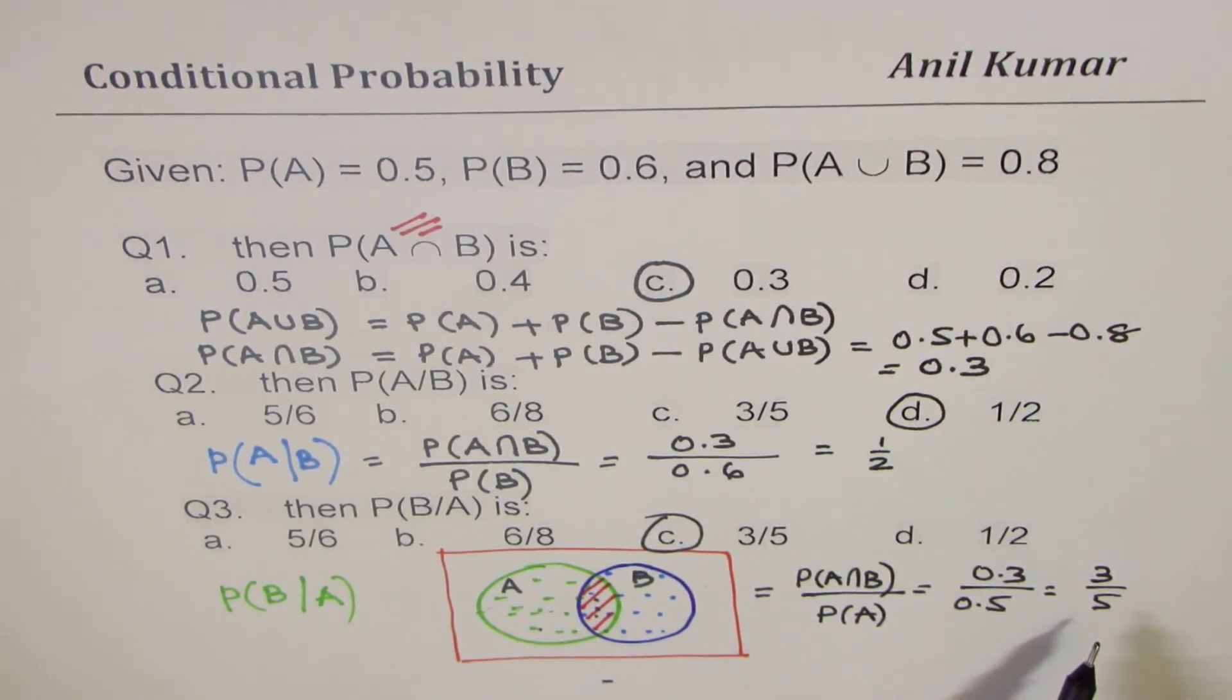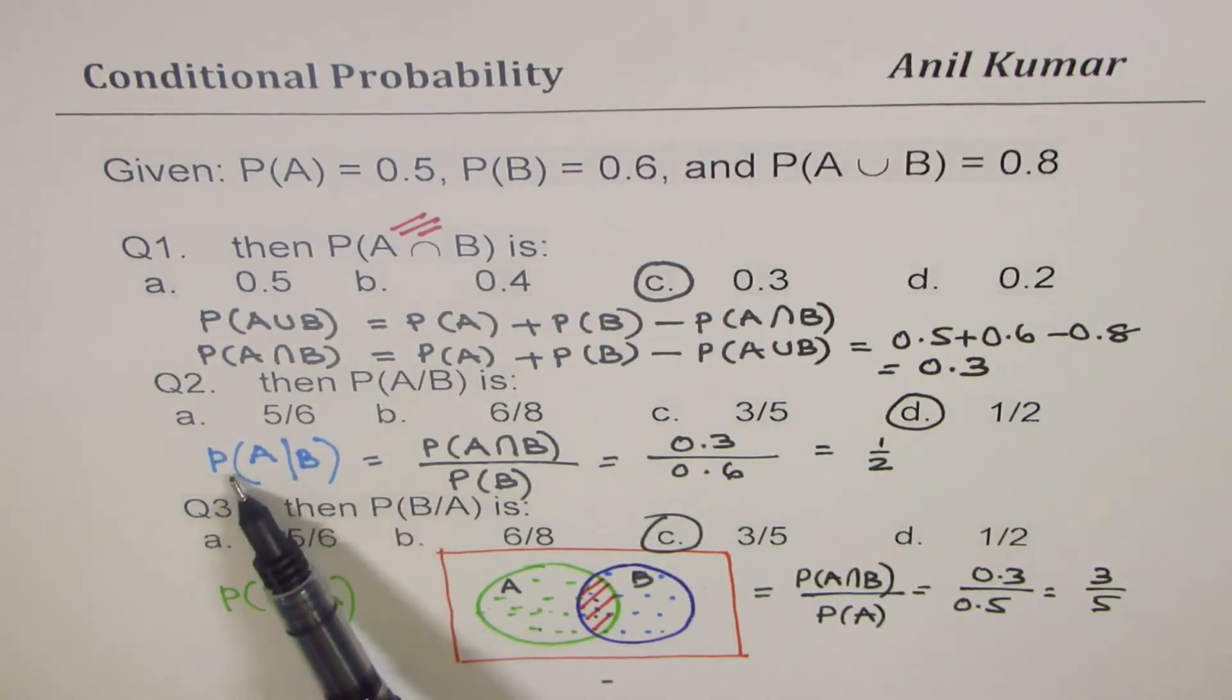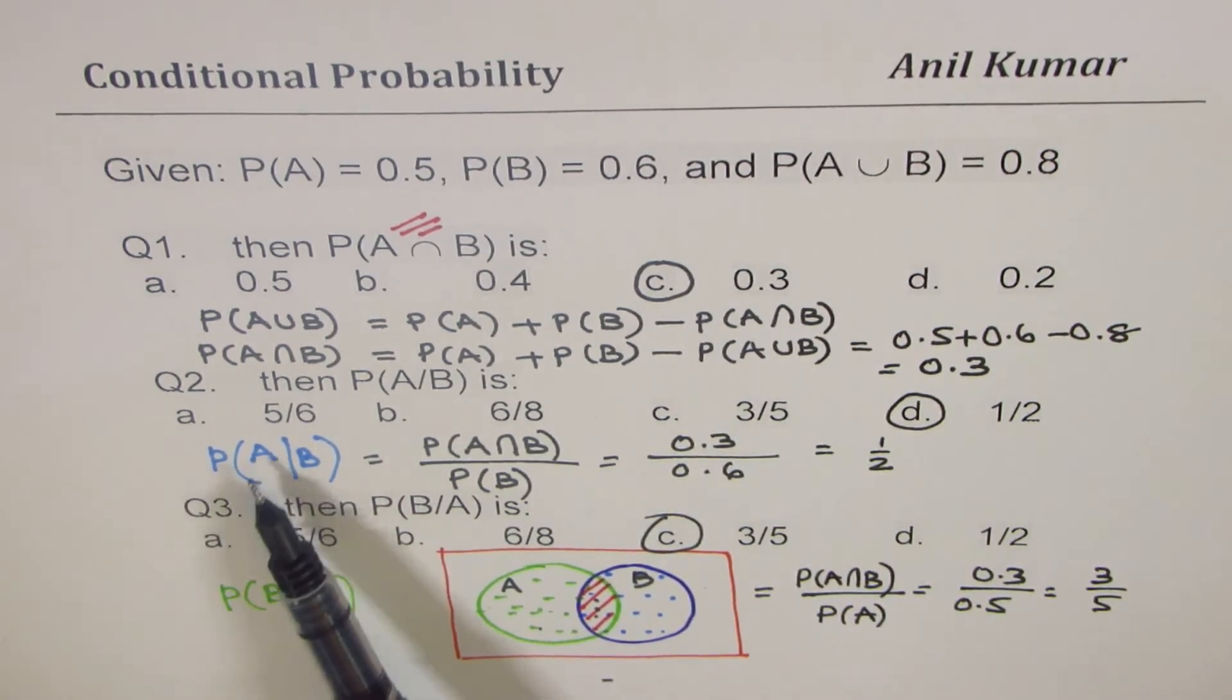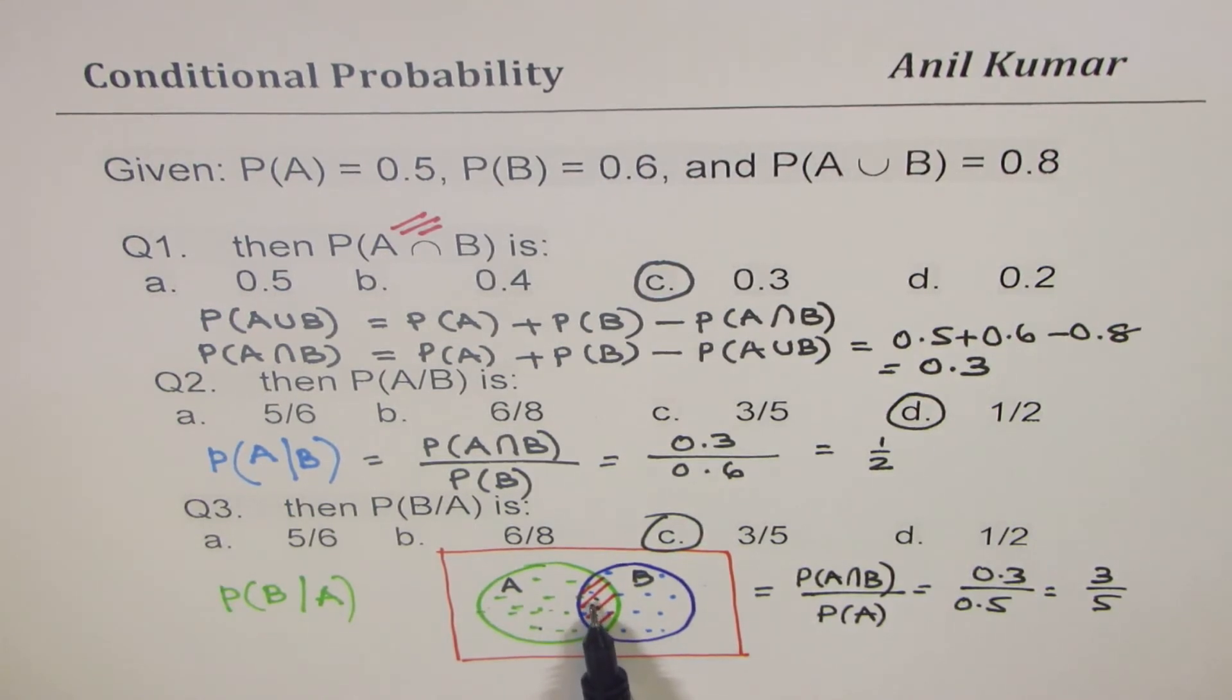So whenever we are talking about conditional probability, as one has happened what is the probability the other will also happen, in that case the denominator is the probability of what has already happened and the numerator is intersection of the two. So I hope this concept was clear, and we will move on with this concept to solve many questions on conditional probability. I hope that makes sense.